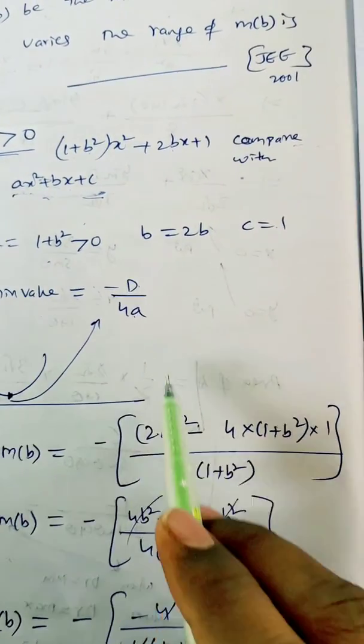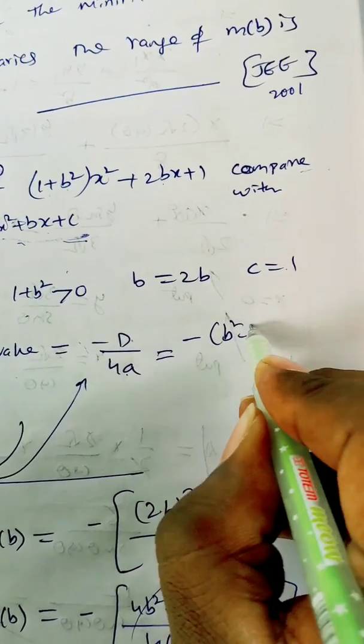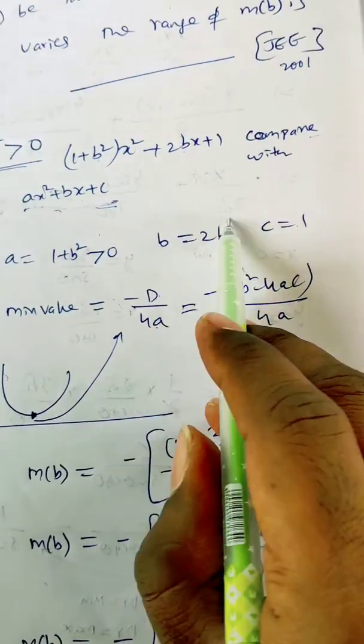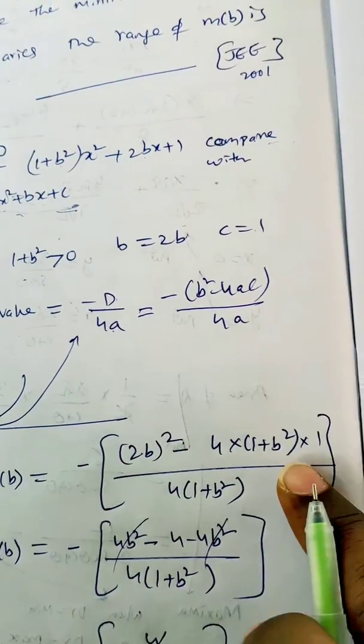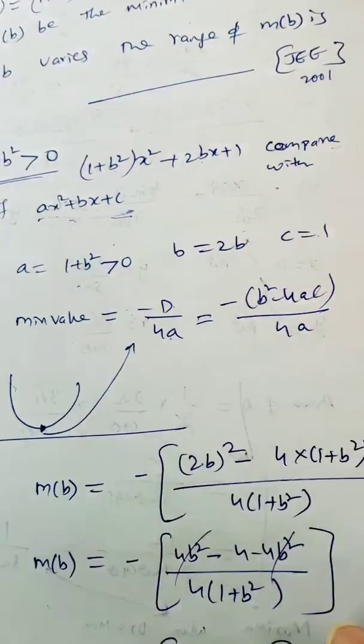So m(b) = -D/4a = -(b² - 4ac)/4a. So b is 2b, (2b)² - 4(1+b²)(1) divided by 4(1+b²).